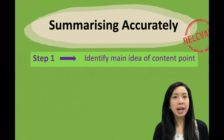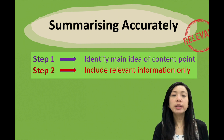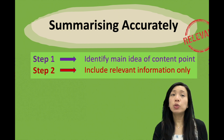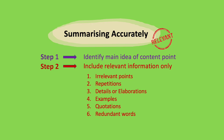So these are the steps we've covered today. Step one: identify the main idea of the content point. Step two: only include relevant information, meaning we exclude all the unnecessary stuff — and those are the six things I've covered in today's lesson.